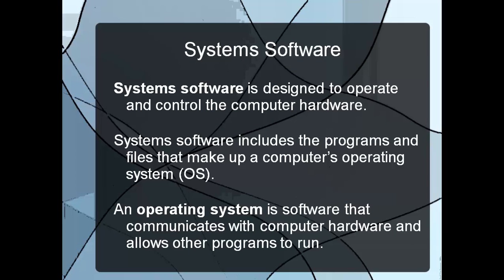The third type of software is system software, which is designed to operate and control the computer hardware. It's the program that allows your keyboard, mouse, and monitor to function properly. System software includes the programs and files that make up a computer's operating system — any software that communicates with the computer hardware and allows other programs to run. It's essentially the brain of the computer, making sure everything is interacting properly.